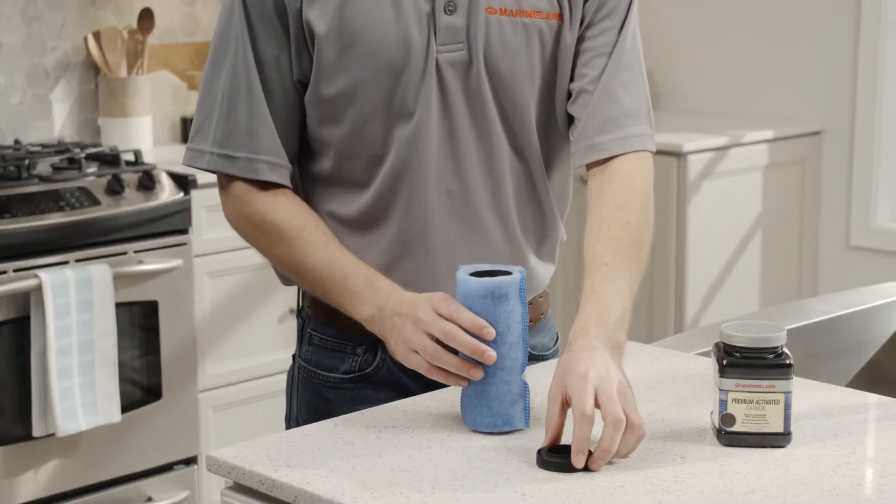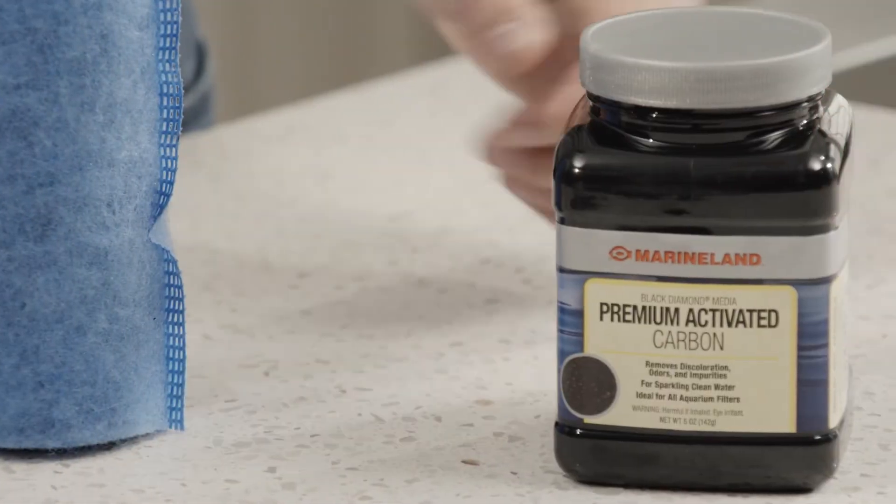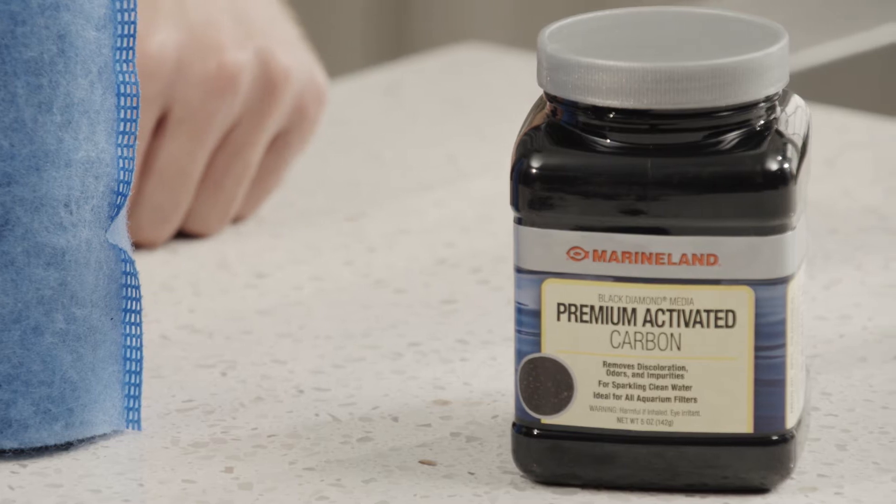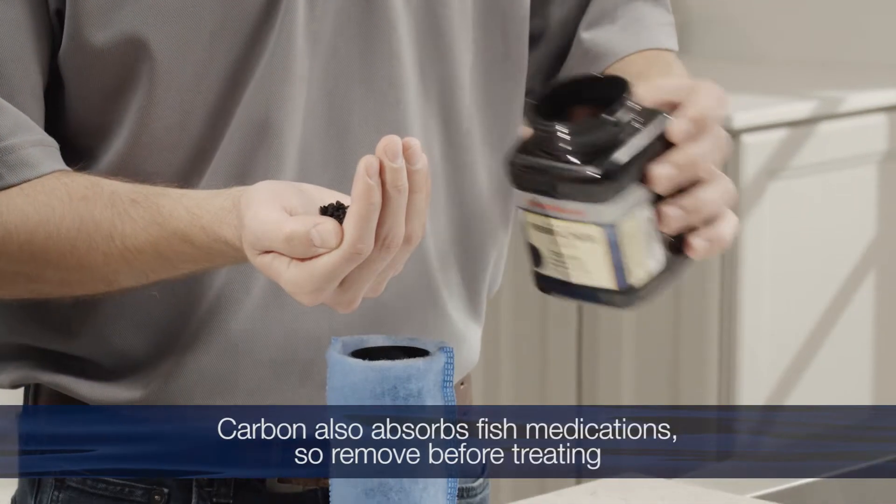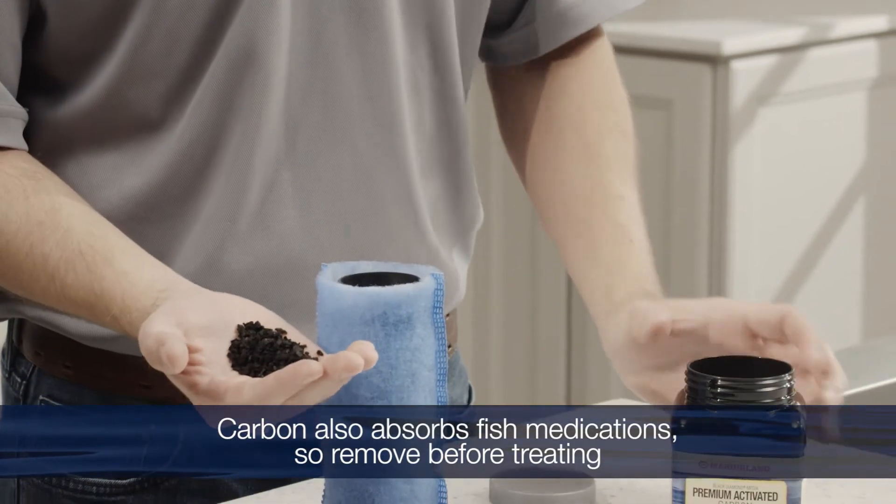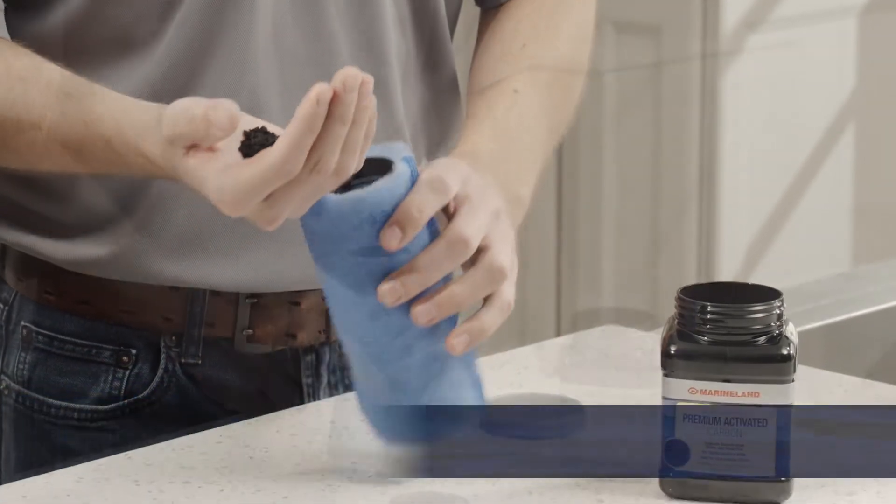Activated carbon is essential for keeping your aquarium in tip-top condition. It's specially treated to be highly porous, giving it a large surface area that absorbs pollutants from both the air and your water.